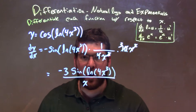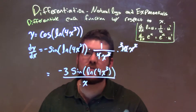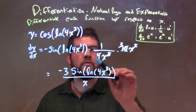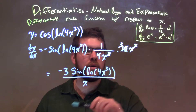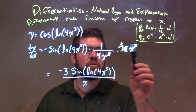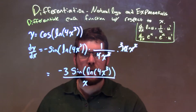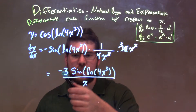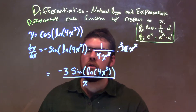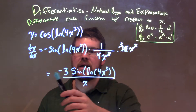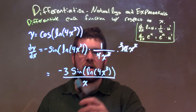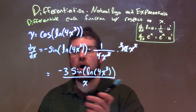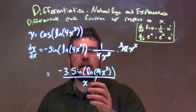At this point we have found our derivative, so let's use algebra to simplify. 12 and 4 simplify out to 3 in the numerator. x squared over x to the third just leaves us x in the denominator. Put the negative 3 out front, then the sine. So our final answer is negative 3 times the sine of natural log of 4x to the third power, all over x.